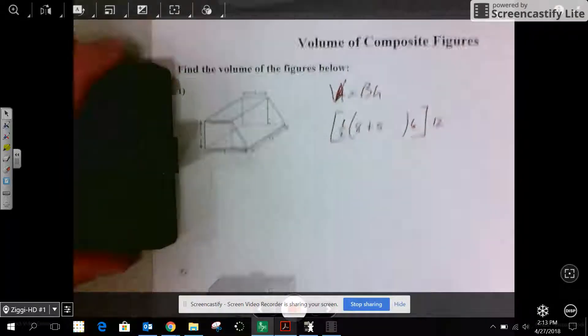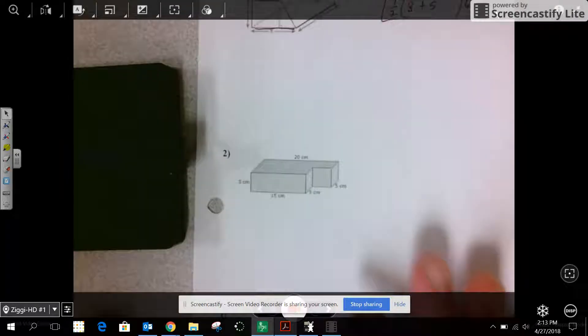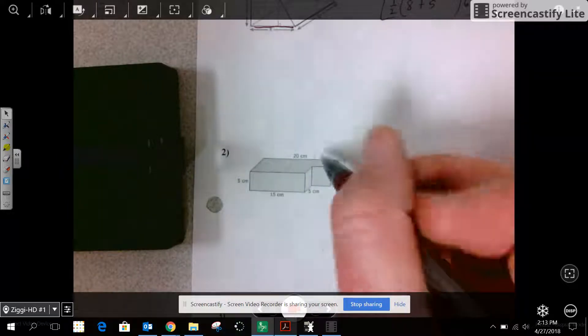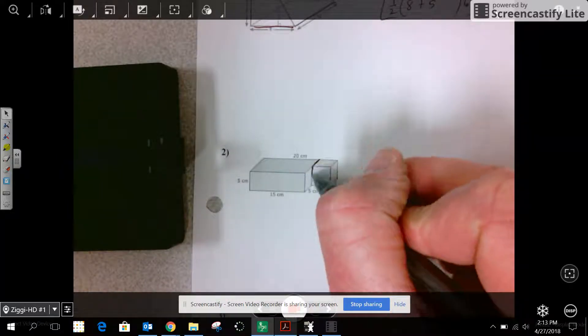Next shape is kind of a compound shape. It's made up of two prisms. You can divide it up however you want to. I'm going to divide it up into this little prism right here.